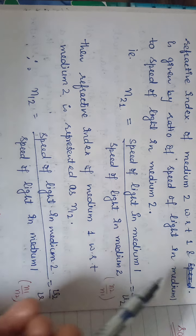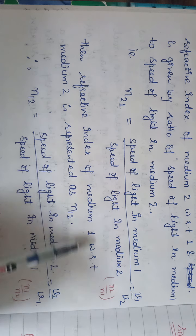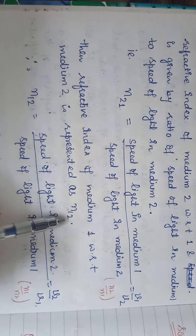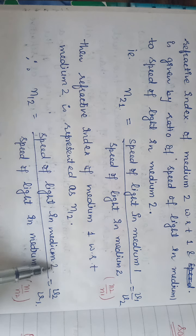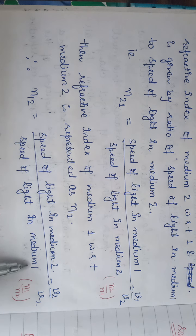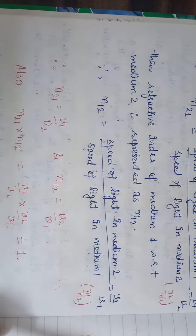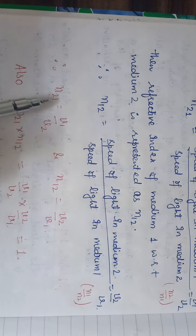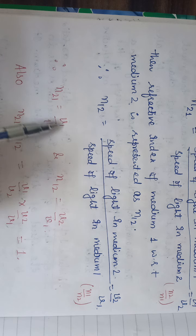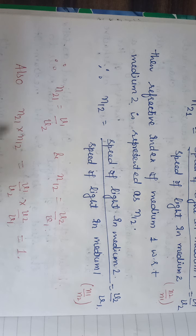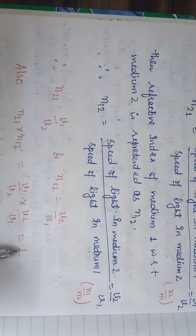Now taking the reverse: the refractive index of medium one with respect to medium two is represented as n₁₂. This means the speed of light in medium two upon the speed of light in medium one, which equals v2 upon v1, or equivalently n1 upon n2. So we have: n₂₁ equals v1 upon v2, and n₁₂ equals v2 upon v1.